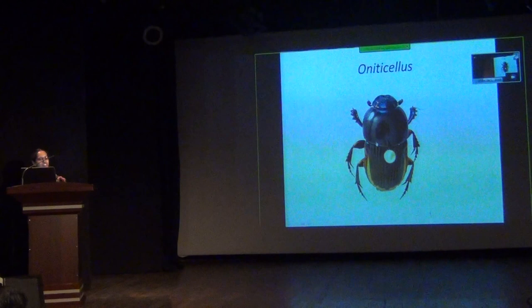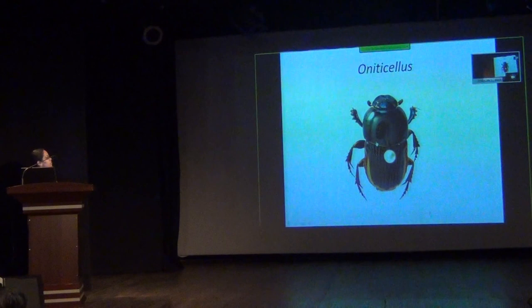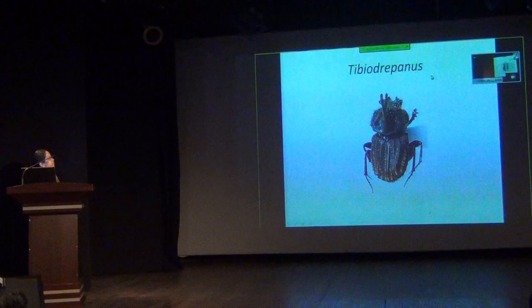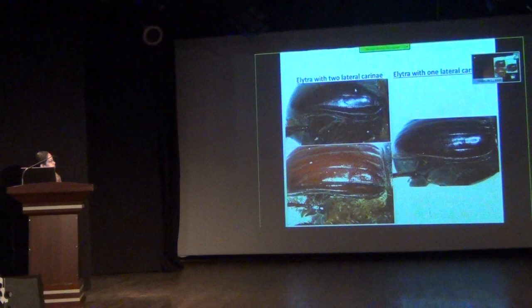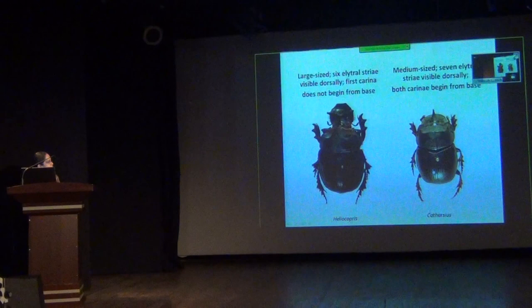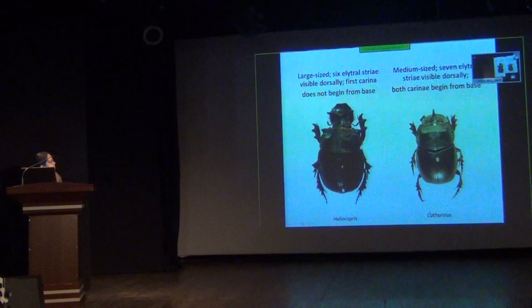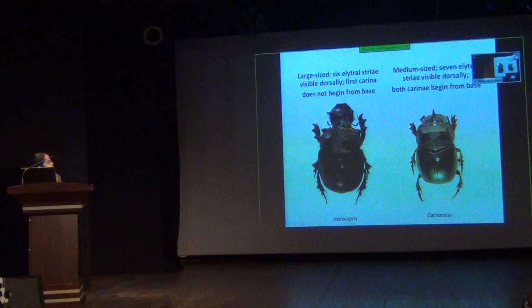If the elytra is fringed before the hind margin, check whether the sides of the abdomen are exposed — if exposed, it is Onthophagus. Now checking whether the elytra has two lateral carinae: if it has two lateral carinae, it can be either Heliocopris or Catharsius. Heliocopris has six elytral striae and the first carina does not extend from the base. If medium-sized with seven elytral striae, it is Catharsius. For Heliocopris the carina starts midway; for Catharsius both carinae start from the base.